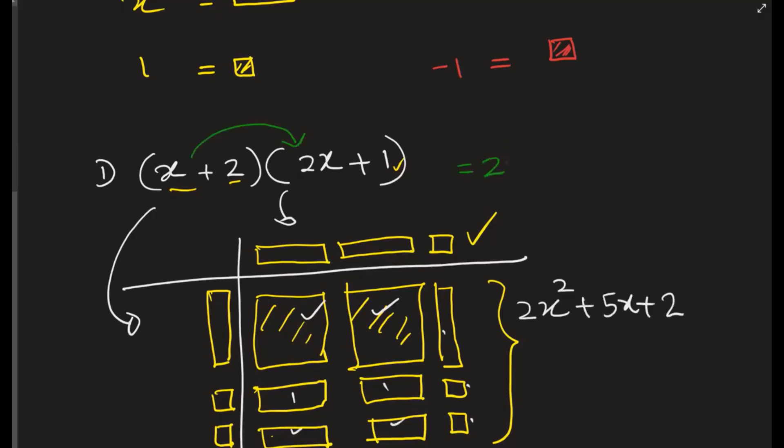Now we can use the FOIL method to test. So the two first terms will get me 2x squared. The two outside terms will give me x. The two inside terms should give me 2 times 2x, which is 4x. And then the last two terms: 2 times 1 is 2. So now, the two middle terms you can put together—x plus 4x gives me 5x. Voila! That's that.